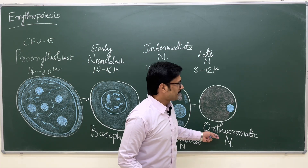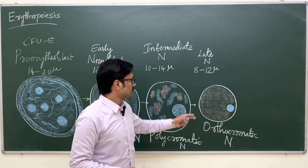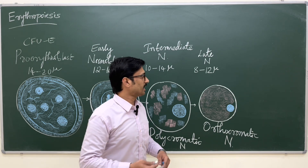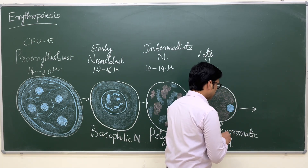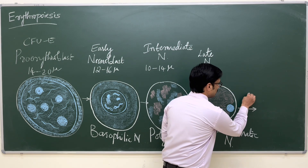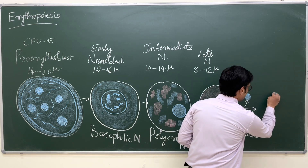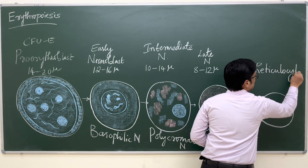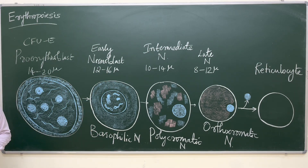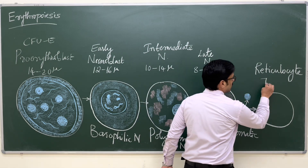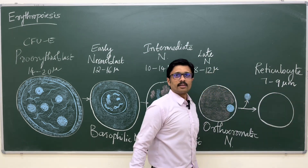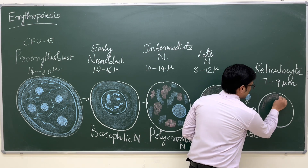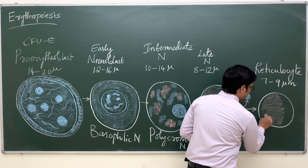The orthochromatic normoblast does not have the property of cell division because the nucleus is non-functional. The late normoblast differentiates into the next series by extrusion of the nucleus through exocytosis. The remaining cell without any nucleus is the reticulocyte. The reticulocyte is 7 to 9 micrometers in size with no nucleus — only cytoplasm containing hemoglobin.